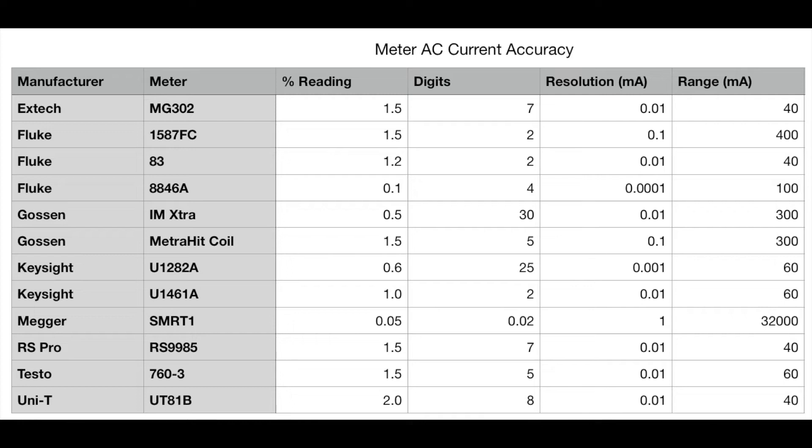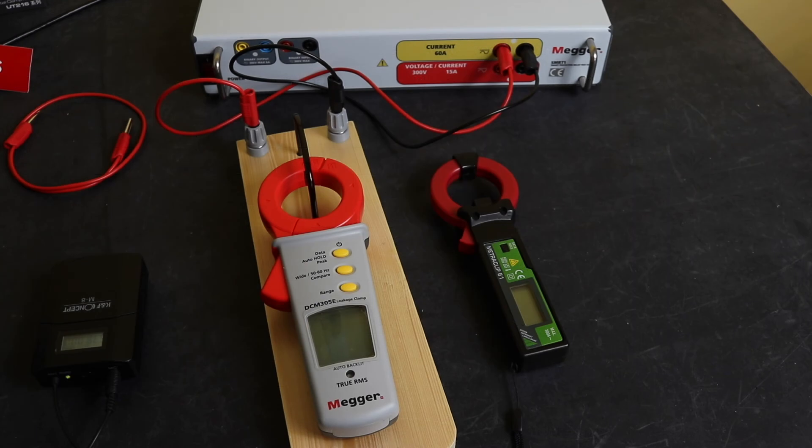So the Keysight U1282A is my next best instrument. In an ideal world, to check calibration on an instrument, you need another instrument with at least three times the accuracy of the meter you're trying to test. So I've got 1.2% nominal on the MetroClip and 1% nominal on the DCM305E. So you see with the Keysight there at 0.6%, I am not three times more accurate. It is only the 8846A that I have, but I think what I'll do, those are the meters, the Gossen there and the other Keysight. I think I'll chuck all them in together and just see how accurate they are at the 300-500mA range using the SMRT.